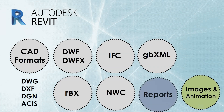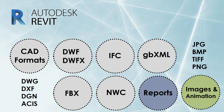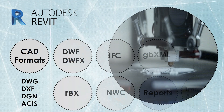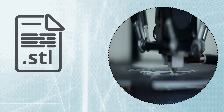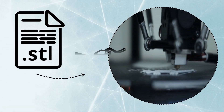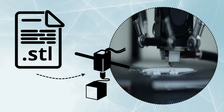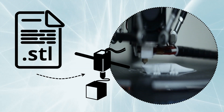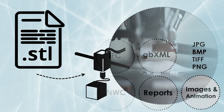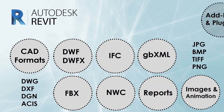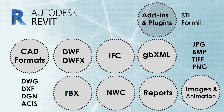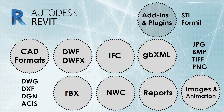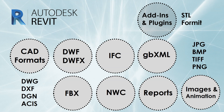Also, various image and animation file formats and reports can be extracted from a Revit model. By installing the STL plugin onto Autodesk Revit, the model can be exported as STL files which are used in 3D printing devices. Adding more plugins will increase the interoperability capabilities of BIM tools. For example, the FormIt plugin can be used to create 3D PDF files and a lot more.